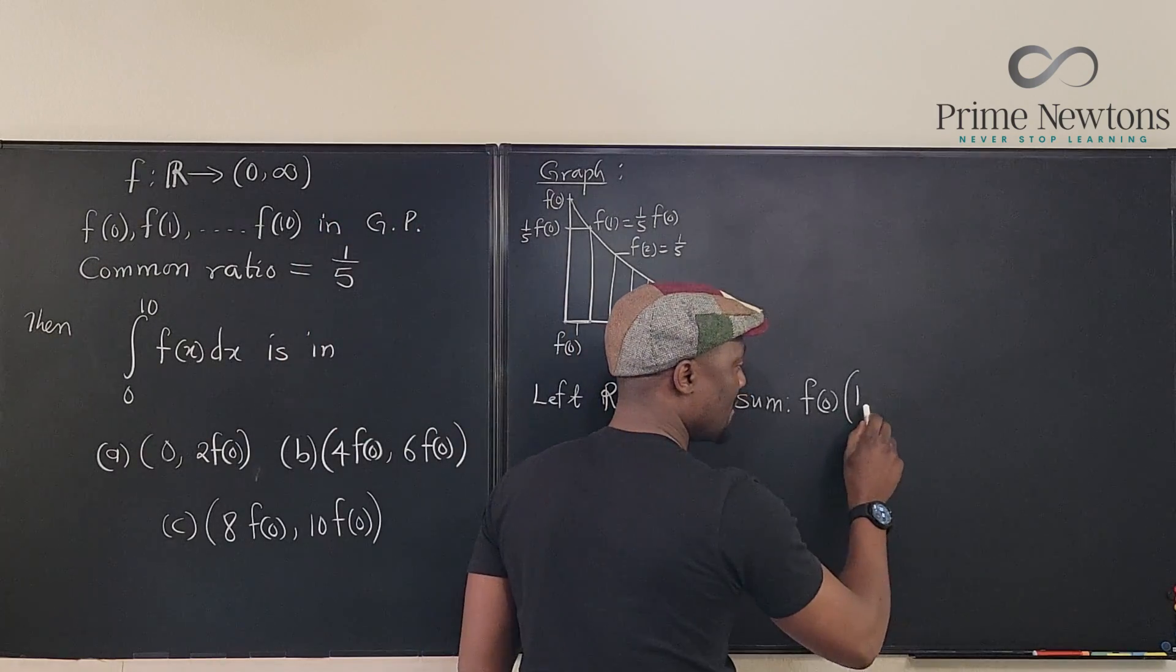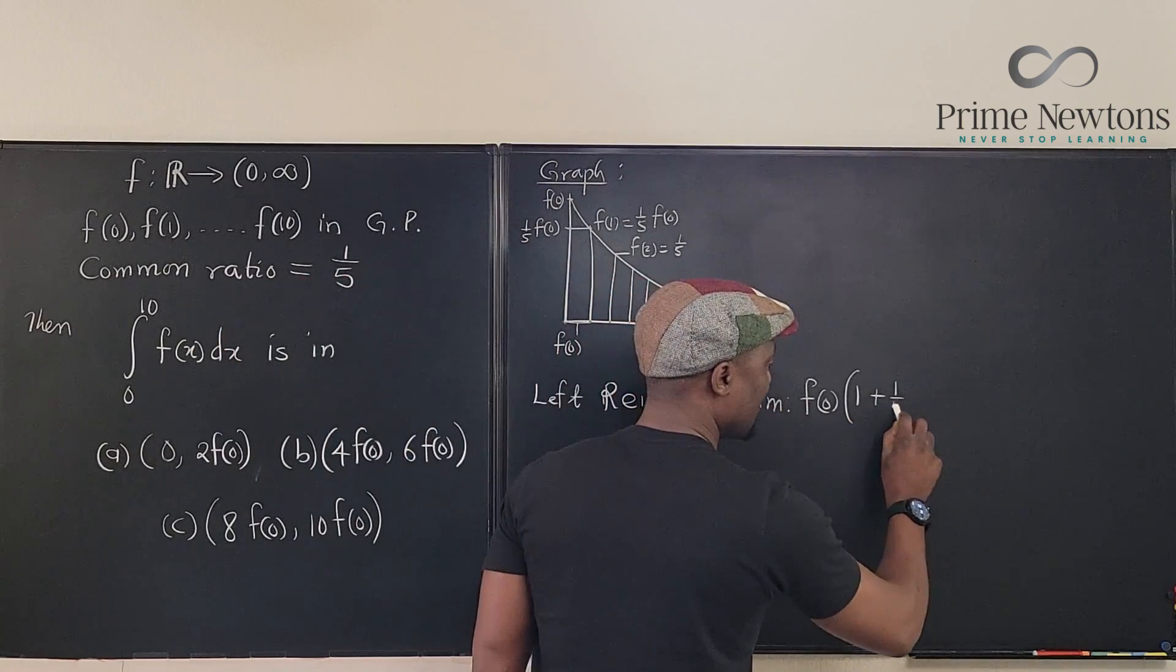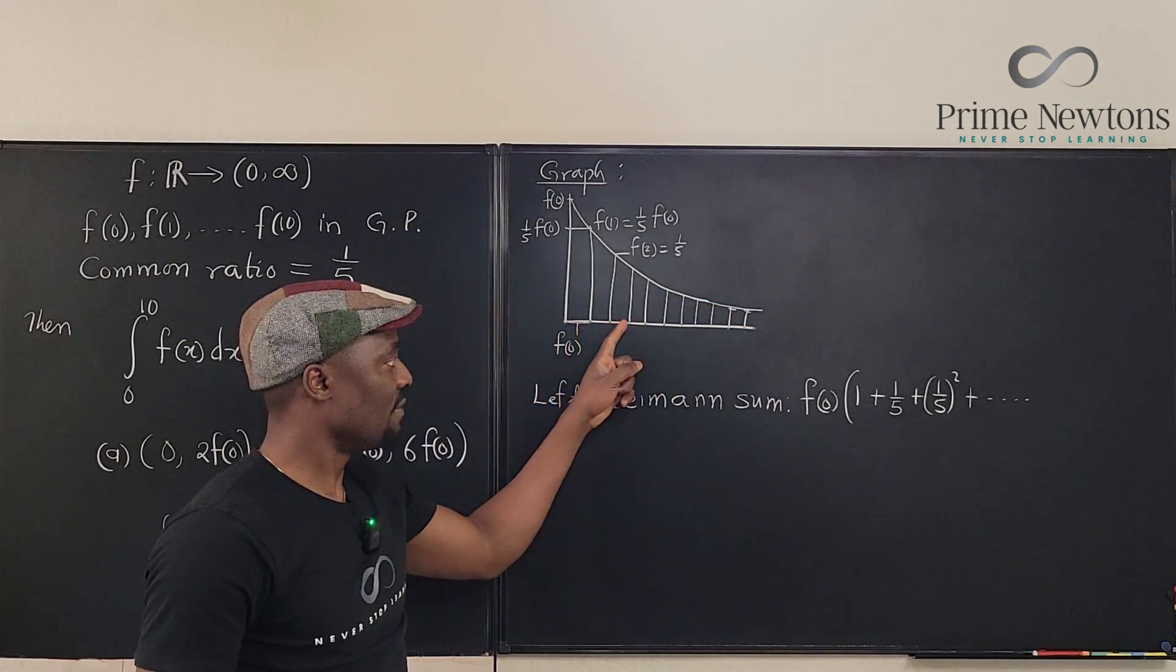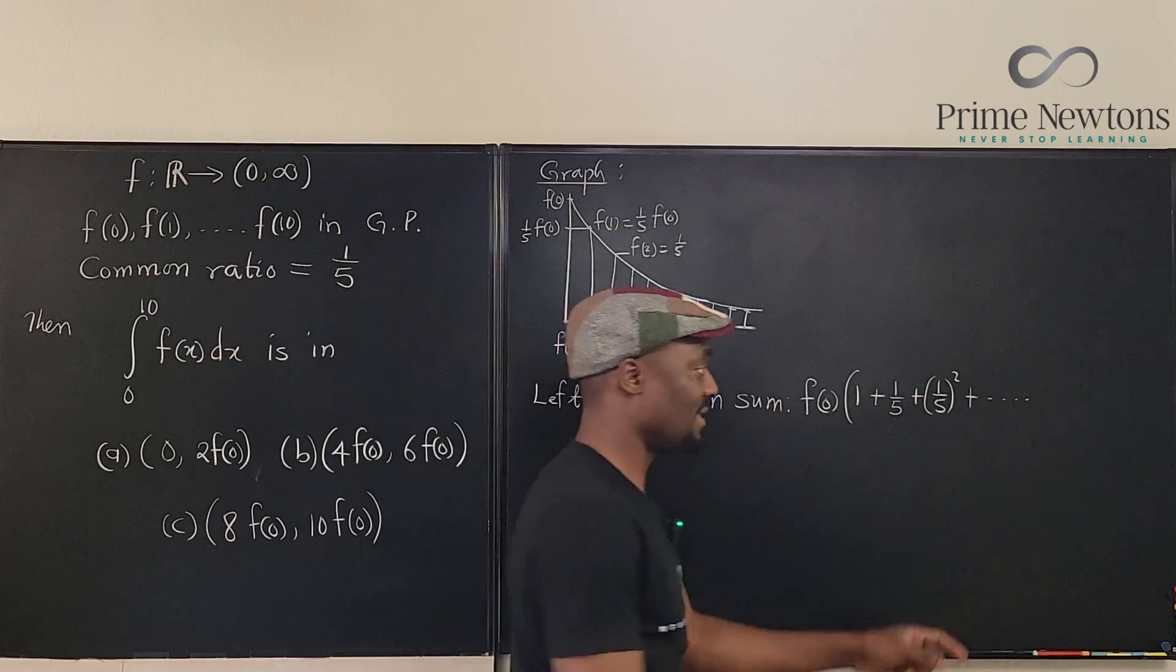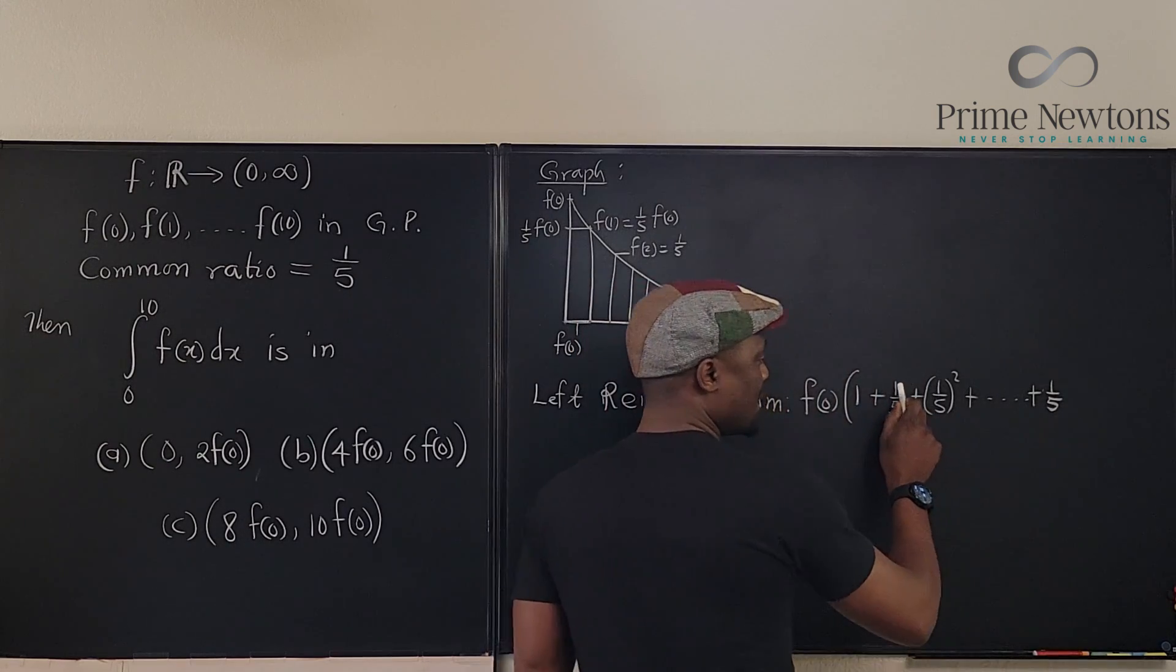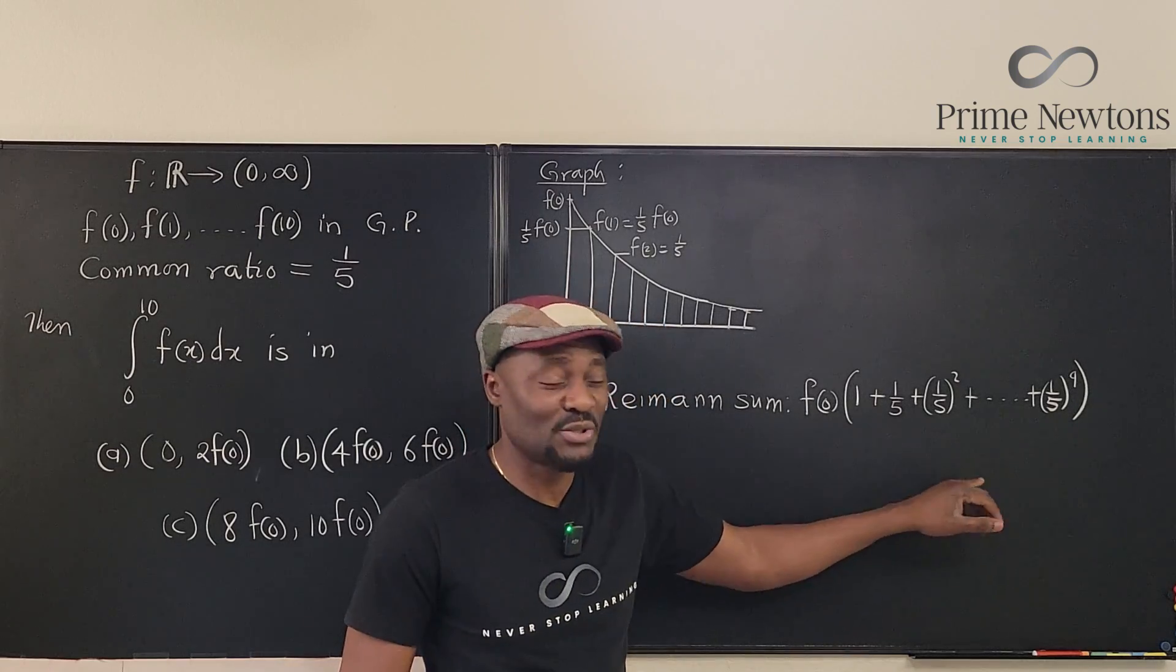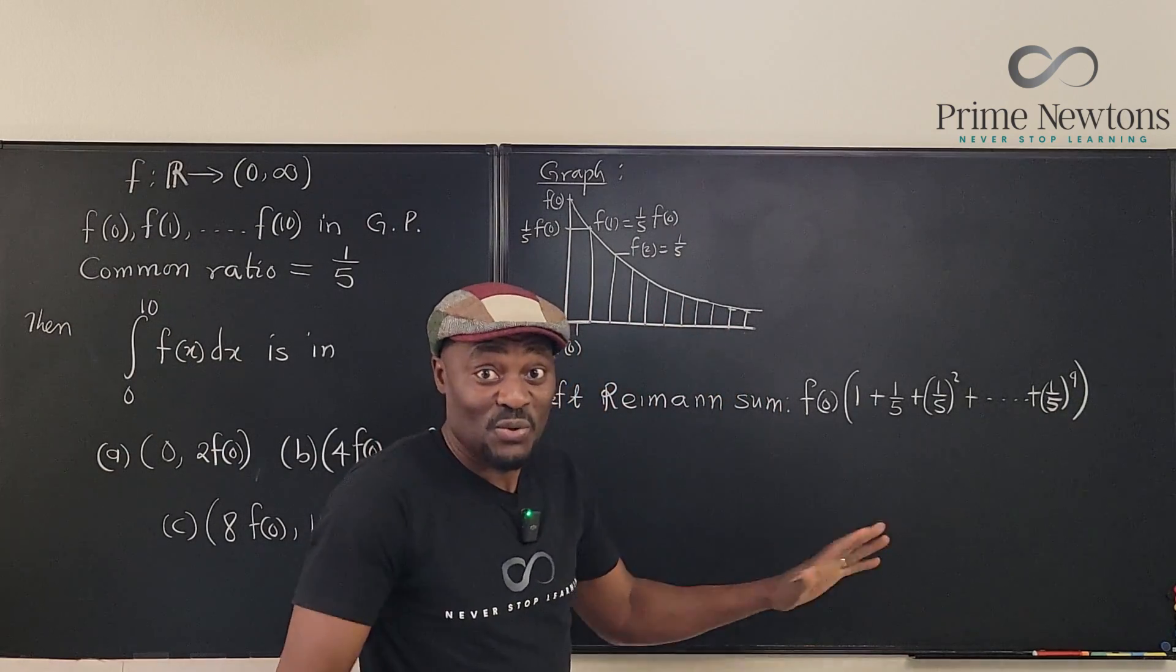It's going to be f(0) times: the very first rectangle will have width one. That's what we've done for the Riemann sum. It's going to be 1 plus the next one is going to be, you factor out one-fifth, it's going to be 1/5 plus 1/5 times 1/5 which is 1/5^2, plus you keep going until you get to—remember you have 10 rectangles, you already took out one, so you're going to have nine of them left that will have this five thing. So you keep going until you get to 1/5^9.